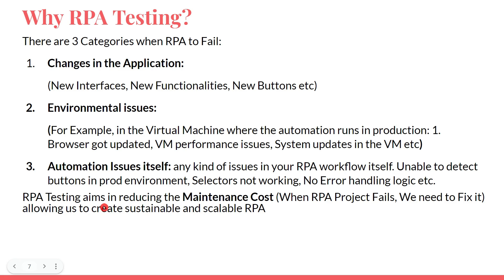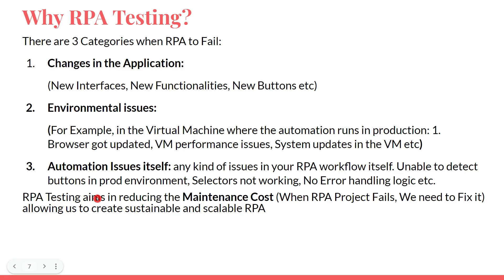RPA testing aims at reducing the maintenance cost. If something goes wrong — changes in the application, environment, or automation workflow — a developer has to sit down and work on it, which could take one day, three days, or a week. There is a cost to it. Through RPA testing, you can test proactively — not after the problem happens, but you already know how to handle it.